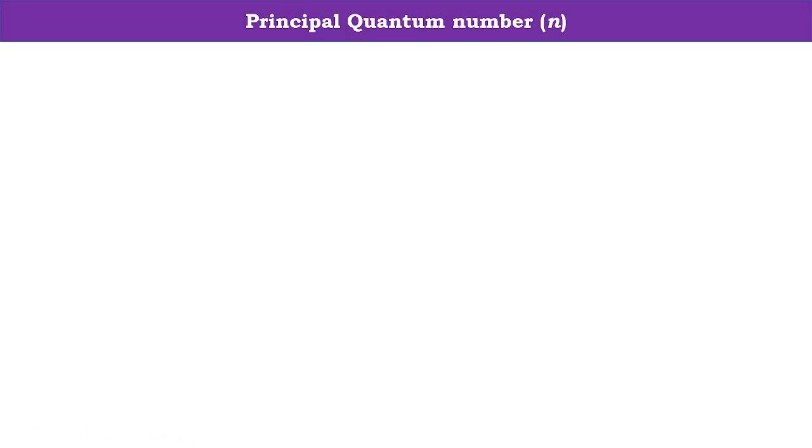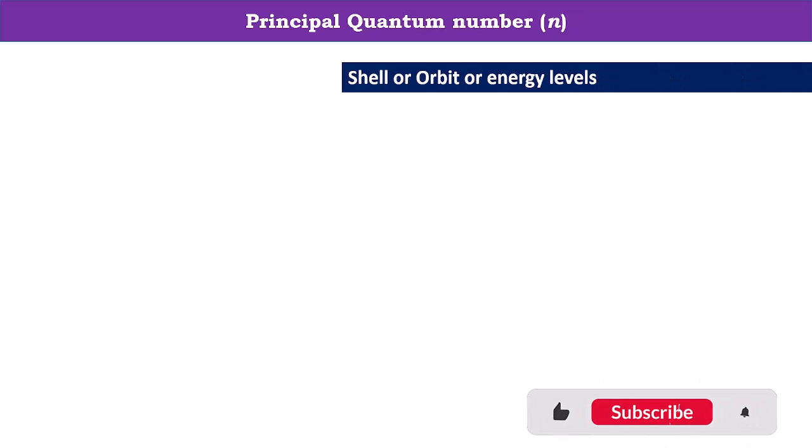Hello friends. In this video, we are going to learn principal quantum number. This principal quantum number gives information about shells. These shells are known as orbit or energy levels.